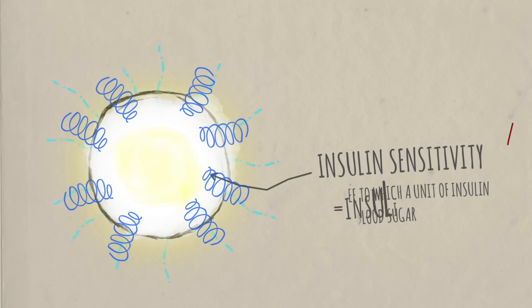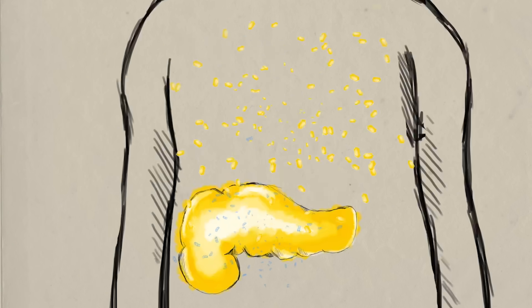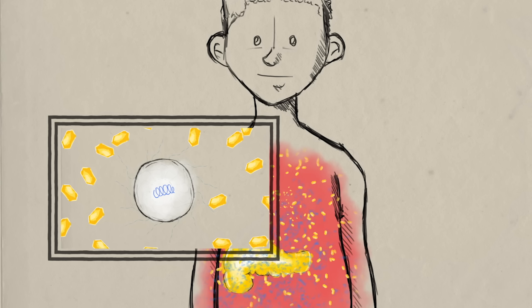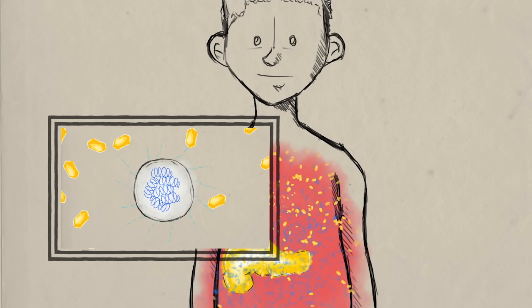If insulin sensitivity goes down, that's known as insulin resistance. The pancreas still sends out insulin, but cells, especially muscle cells, are less and less responsive to it. So blood sugar fails to decrease, and blood insulin continues to rise.